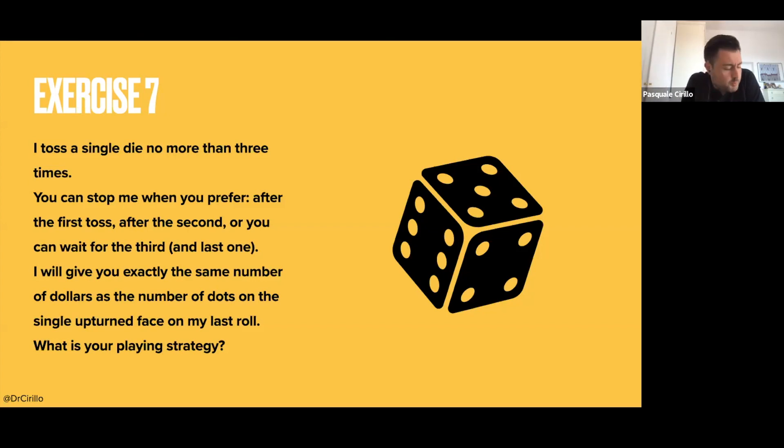So I propose the following game. I toss a single die, no more than three times. You can stop me when you want, after the first toss, after the second, or you can wait until the end. And the last one is necessarily the third. When you stop me, we look at the die and we look at the numbers, the number of dots that appear on the face that looks towards us. So say that this face is a five, I give you $5, or if you want to make the game more interesting, I give you $5,000.